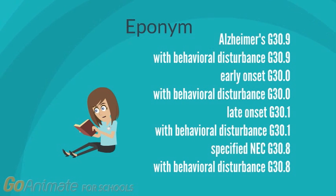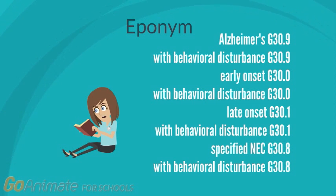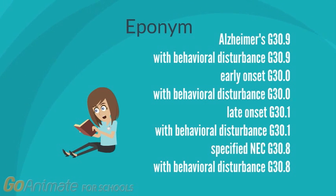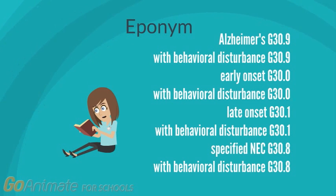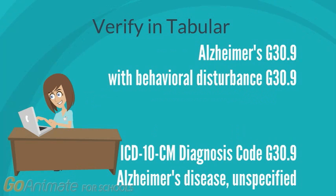In the alphabetical index we can also look up an eponym. An eponym is the name of a disease, condition or procedure that is named after a person, such as Lou Gehrig's or Alzheimer's.